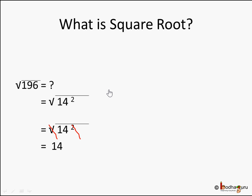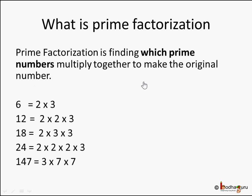Now let's try to find the square root of any given number. Let's remember what prime factorization is. Prime factorization is all about finding which prime numbers are multiplied together to make the original number. A prime number is a number which can only be divided by itself or 1. So we take any given number and try to find the product of prime numbers which makes that number.